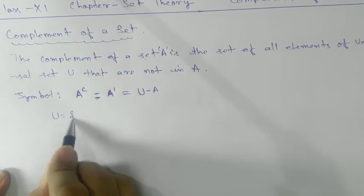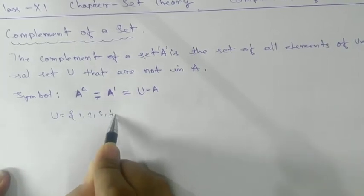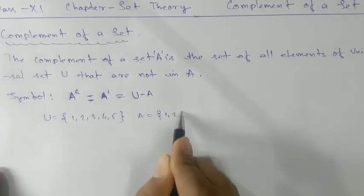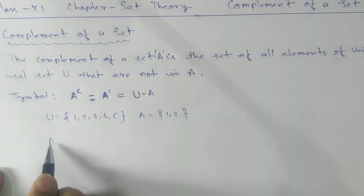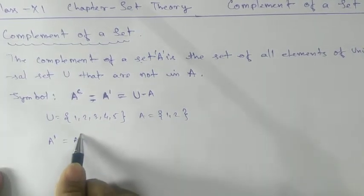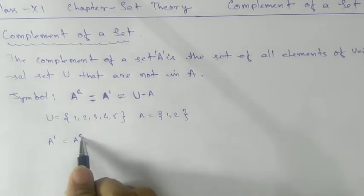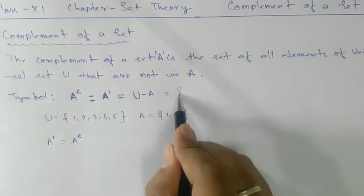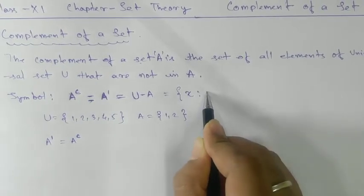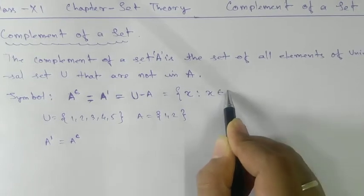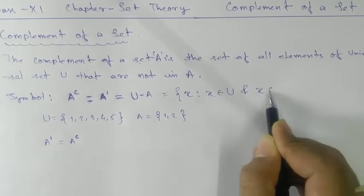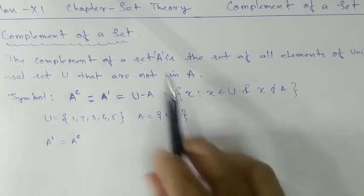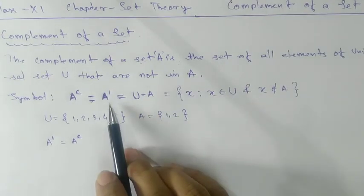Take universal set as {1, 2, 3, 4, 5} and take A as {1, 2}. Then complement of A can be written as A prime or A complement. Another way to represent this: it means X such that X belongs to universal set and X does not belong to A. This is another way to represent the complement of a set A.